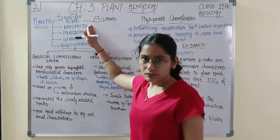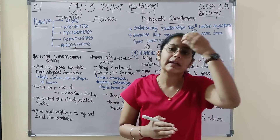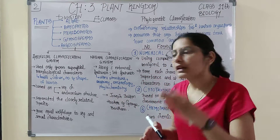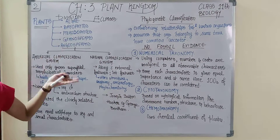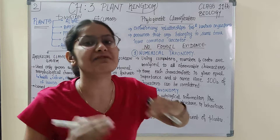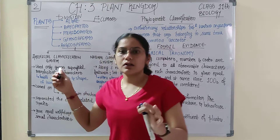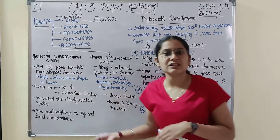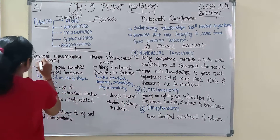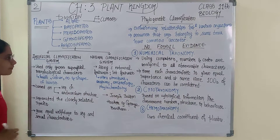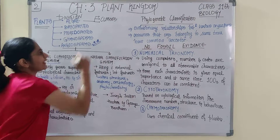Before moving down to algae, I have given you a brief summary of what all things we would be including in this chapter. Now, if you observe, angiosperms are further classified on the basis of different classification systems. The first differentiation is between the artificial classification system and the natural classification system. Let us look into what the artificial classification system is, focusing mainly on angiosperms.